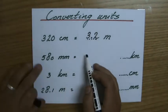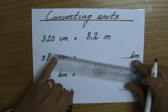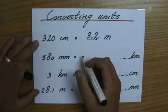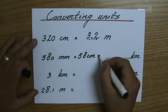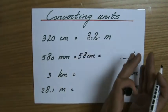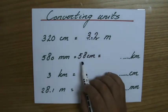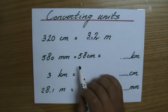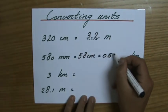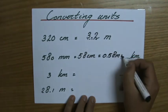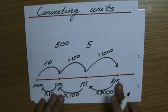From millimeters to centimeters: there are 10 millimeters in one centimeter, so 580 mm divided by 10 gives 58 centimeters. Now step by step to meters: 58 centimeters divided by 100 equals 0.58 meters.